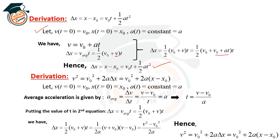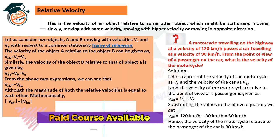The fourth equation of motion: starting from average acceleration Δv/Δt, so (v − v₀)/t = a, then substituting the value from the second equation and performing cross multiplication gives the fourth equation. These are the four equations needed for understanding motion.